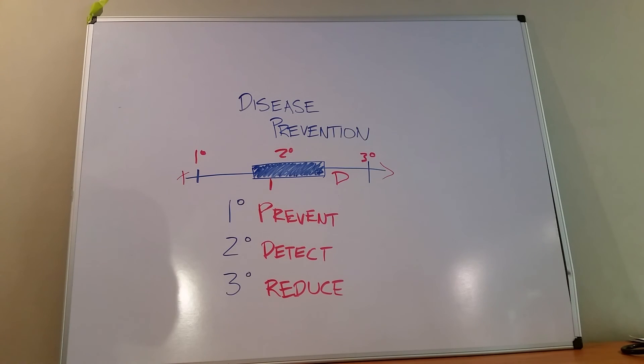So with diverticulosis, that might be things like maybe removing the affected part of the colon. Or maybe monitoring it with more frequent colonoscopies to see if it's developing any sort of abscess, or if the outpouchings are getting bigger. Whatever it is, these are the three different levels of disease prevention.